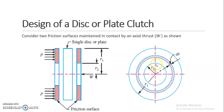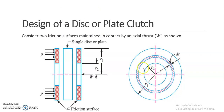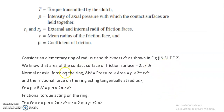Now we know that the friction surface of the elemental ring we have considered — the area, that is the circumference 2πr, times dr, will give us the frictional area of this elemental ring. So frictional surface area is 2πr·dr. The normal or axial force on the ring, denoted by δW, will be equal to pressure × area. Considering pressure P and area 2πr·dr, we get δW = P × 2πr·dr.